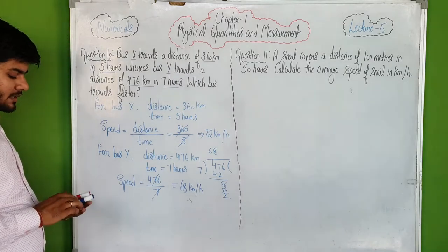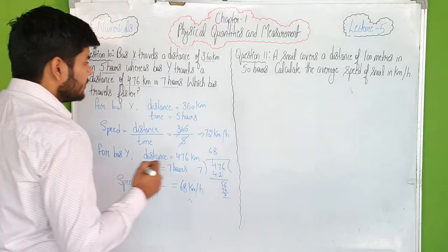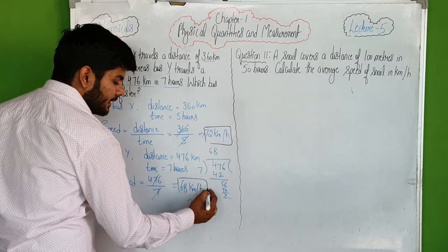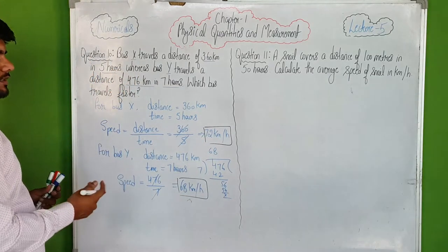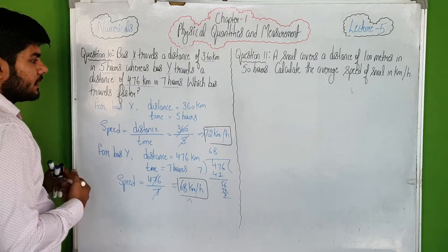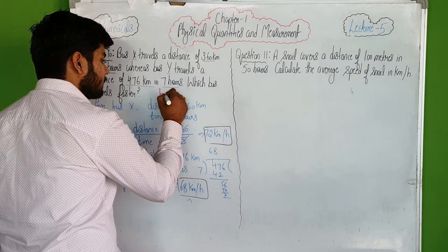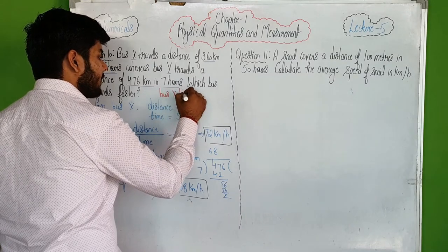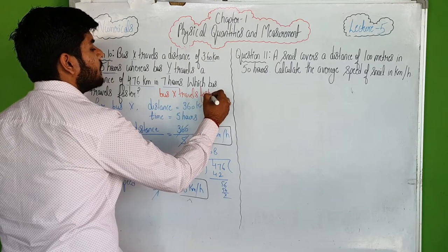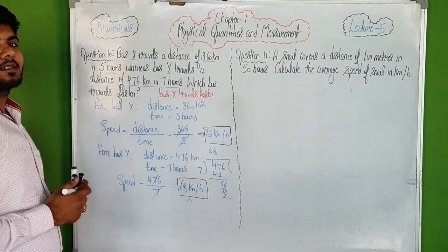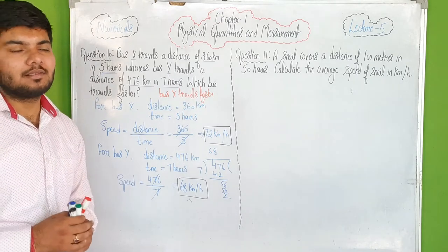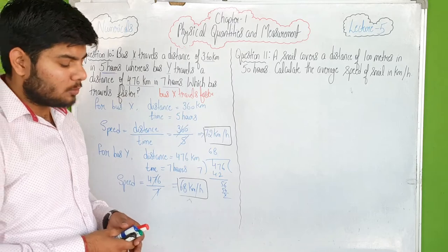Now comparing: bus X's speed is 72 km per hour and bus Y's speed is 68 km per hour. So we can simply say bus X travels faster. That's how you solve this type of numerical. Moving on to numerical number 11.